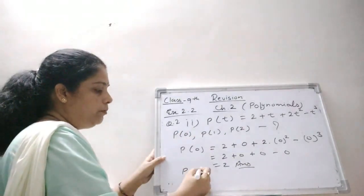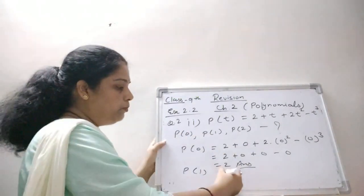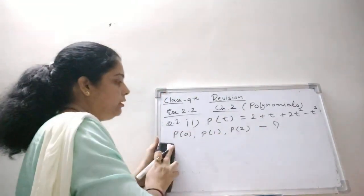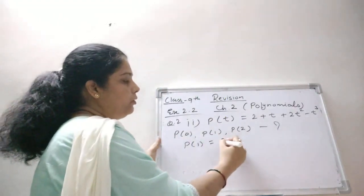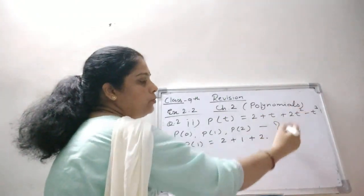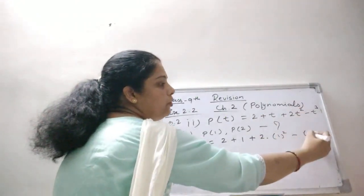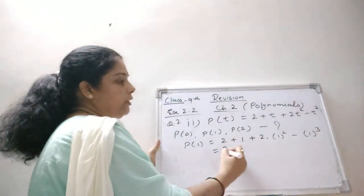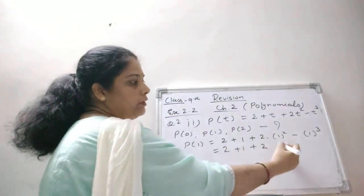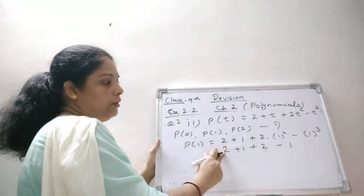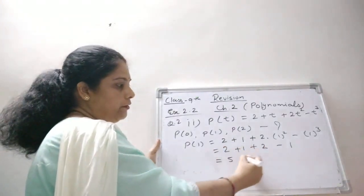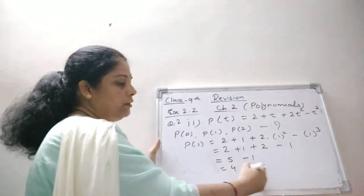Now find P(1): put t = 1 in P(t) = 2 + t + 2t² minus t³. That gives 2 + 1 + 2 × 1² minus 1³ = 2 + 1 + 2 × 1 minus 1 = 2 + 1 + 2 minus 1 = 5 minus 1 = 4. So P(1) = 4.